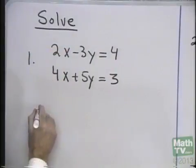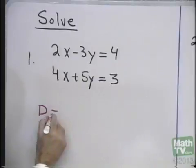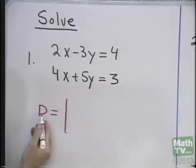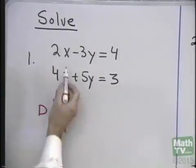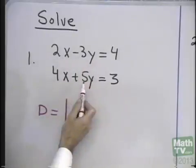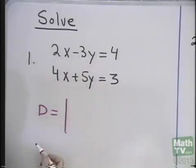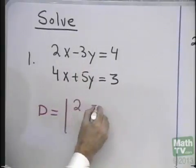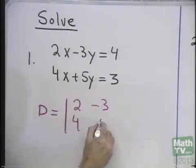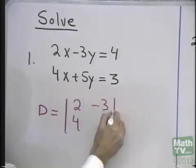Cramer's Rule requires that you form some determinants. The determinant, big D, is the determinant of just the coefficients of x and y in the system of equations. So it'll be 2, negative 3, 4, 5.